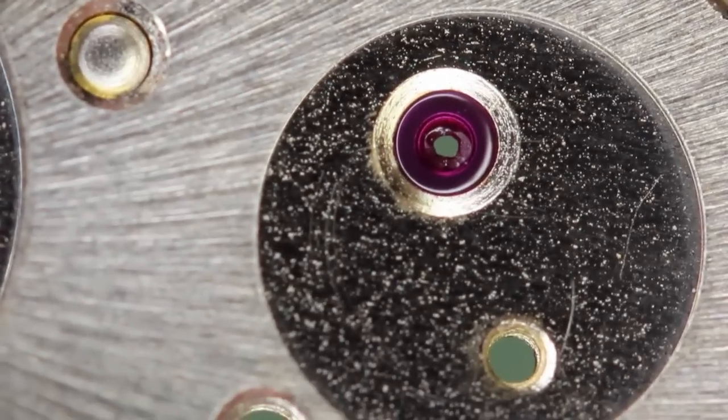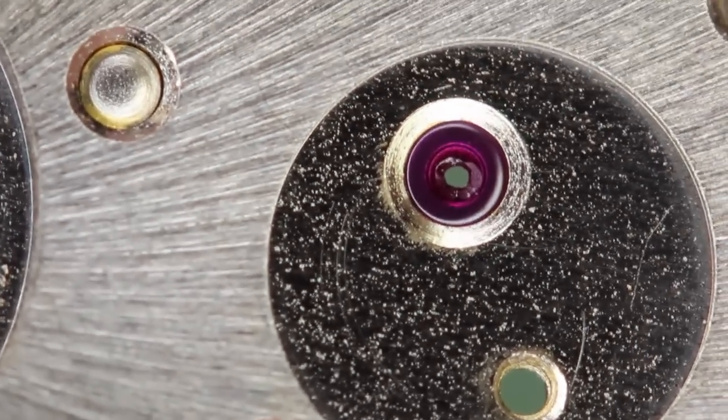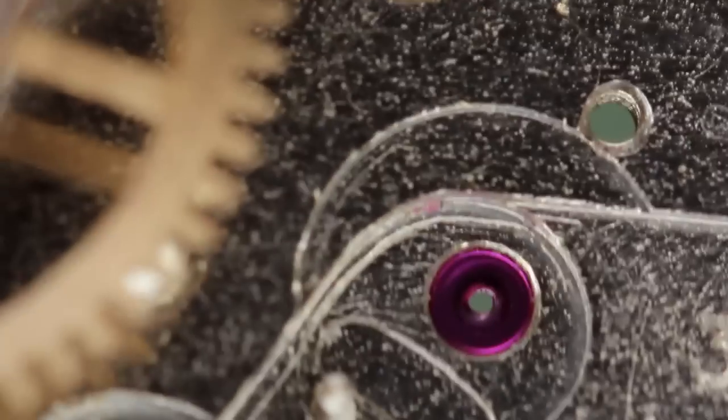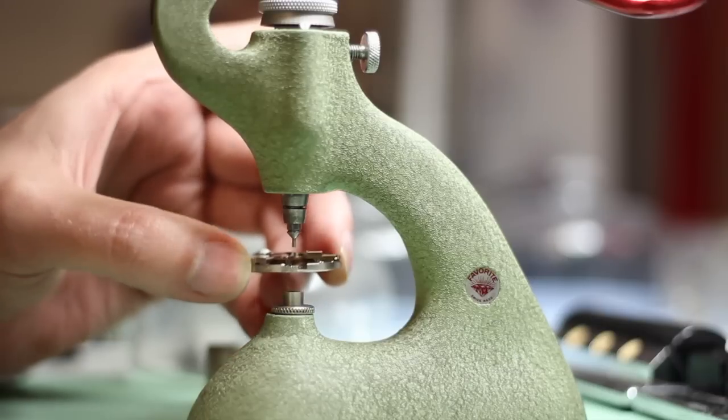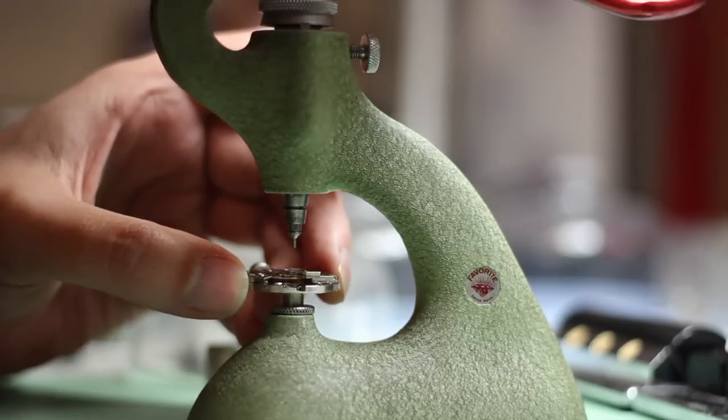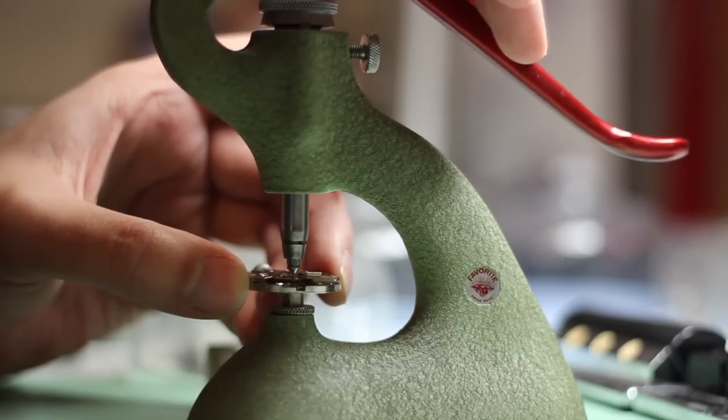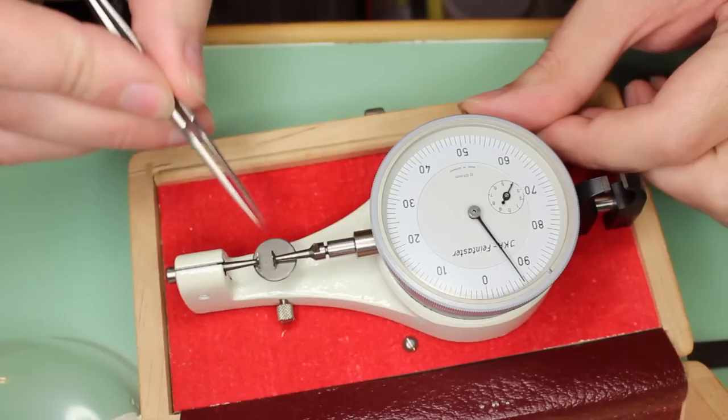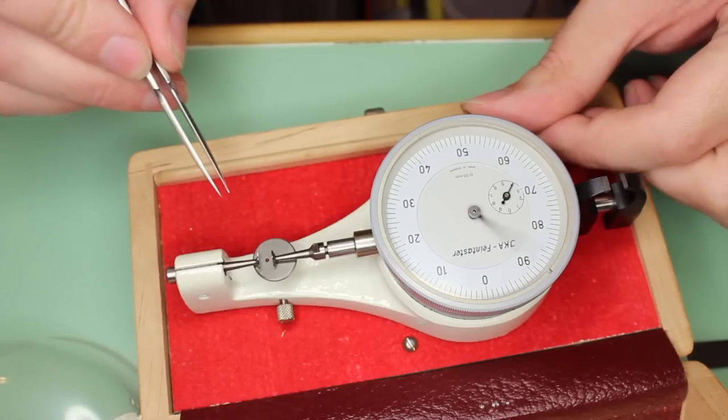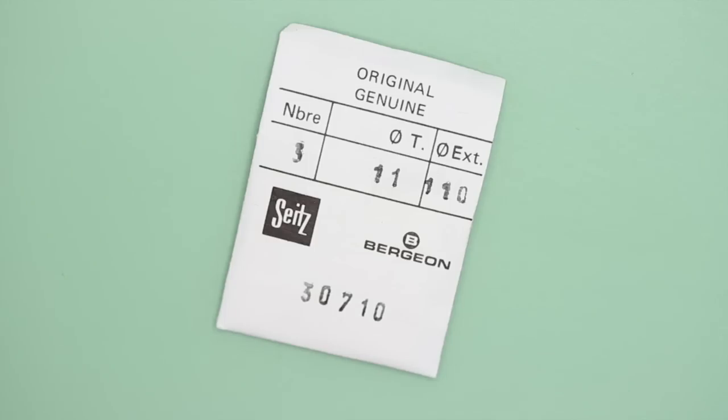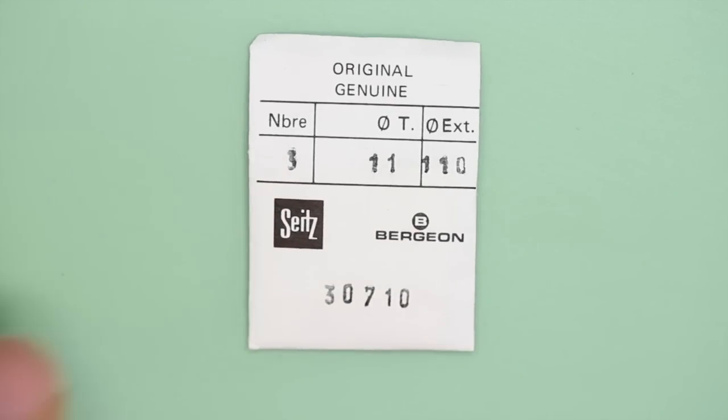In my last video we saw how this balance jewel was damaged on this vintage Omega watch, and then we learned how to remove the broken jewel with this dueling tool and finally we measured the old jewel so that we could determine which replacement to order. In this video we're going to show you how to fit the new jewel.